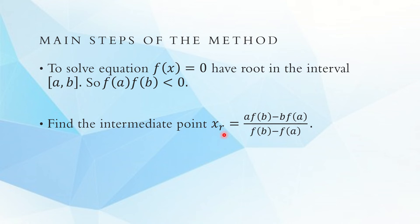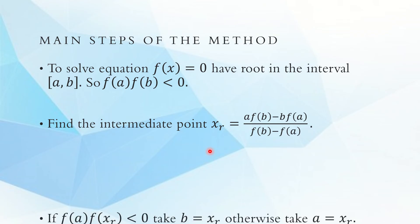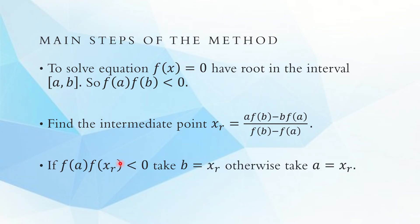Once we have found xr, the intermediate point, we find the value of the function at x = xr. We observe the sign of f(xr) — whether it is similar to f(a) or f(b). If f(a) and f(xr) have opposite signs, we replace b with xr, and then repeat the process, taking xr as the new value for a in subsequent iterations while b remains the same.